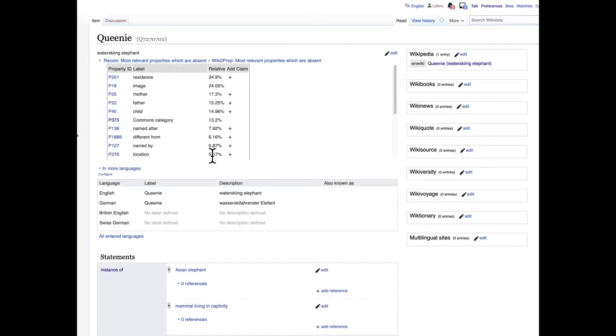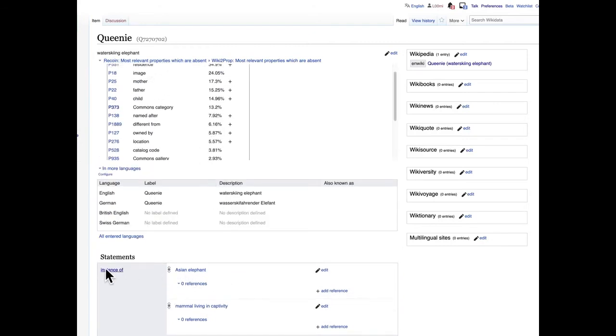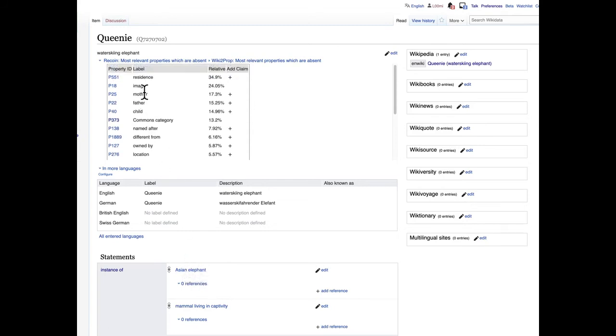Recoin goes through statistics based on the instance types, on the classes of an article, and gathers the properties used on all instances of a class to give you a statistical input. This obviously gives the most obvious predictions but is not down to the individual element.